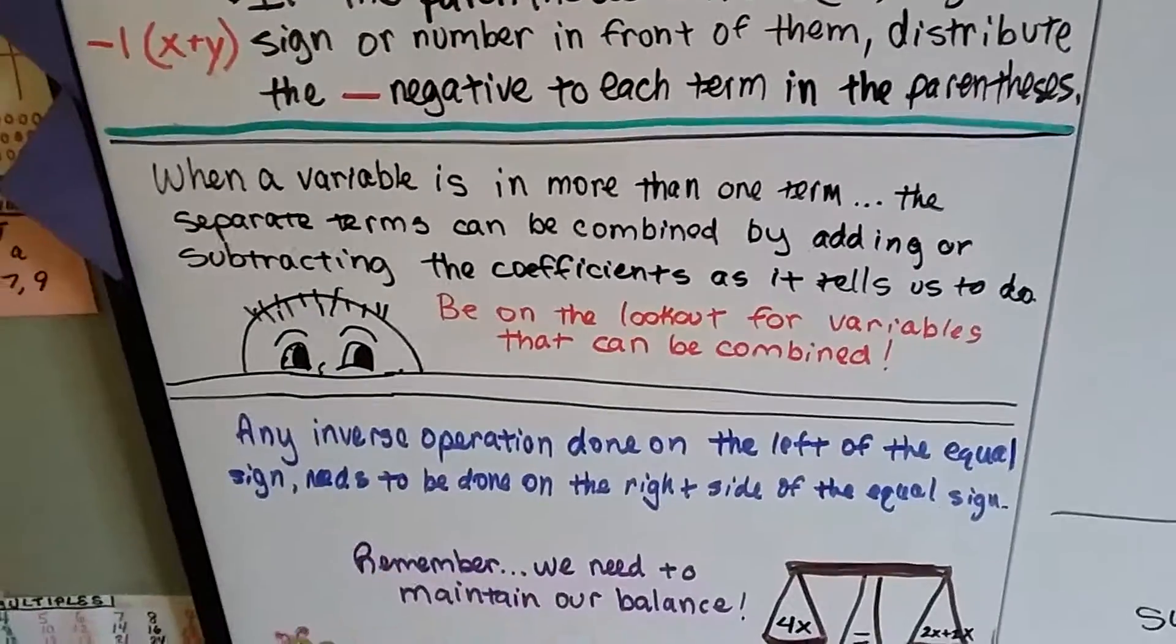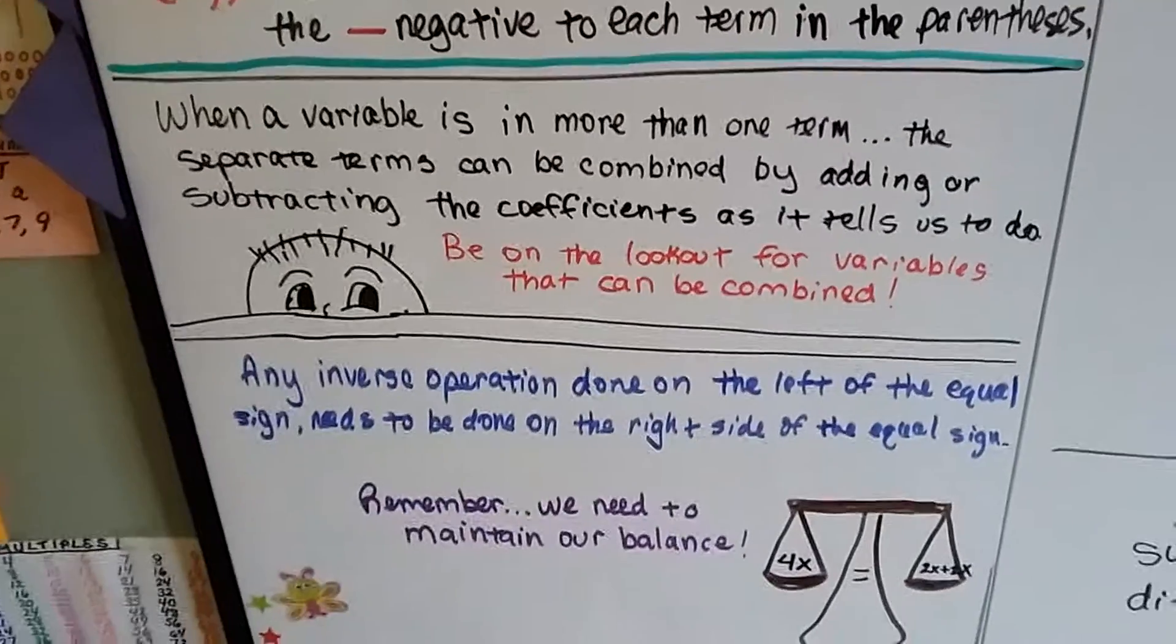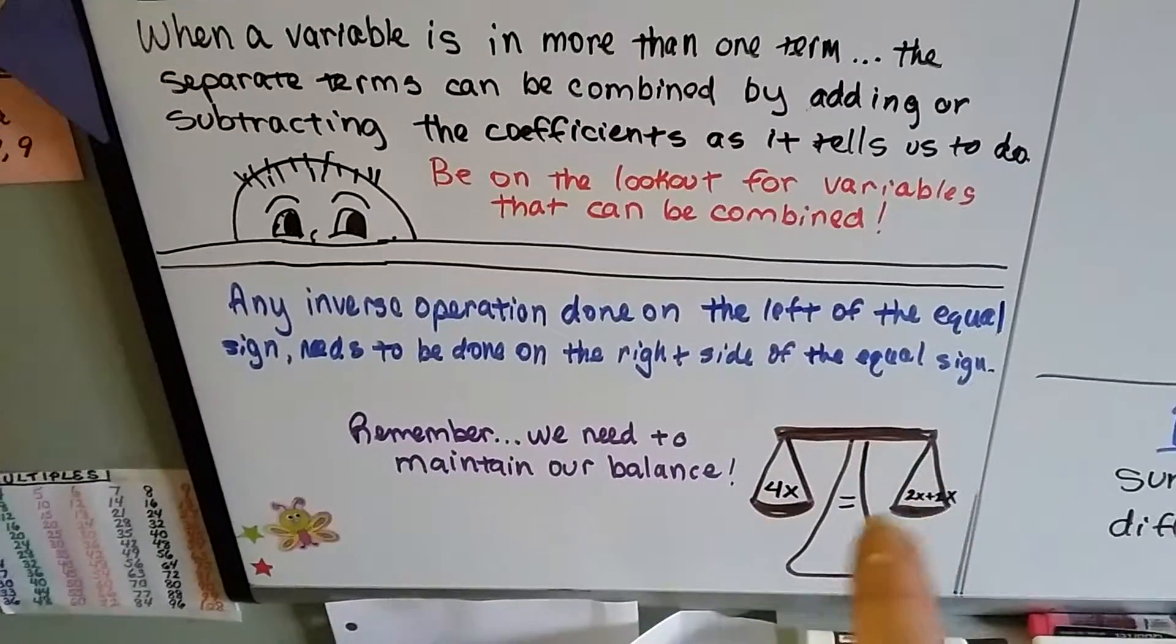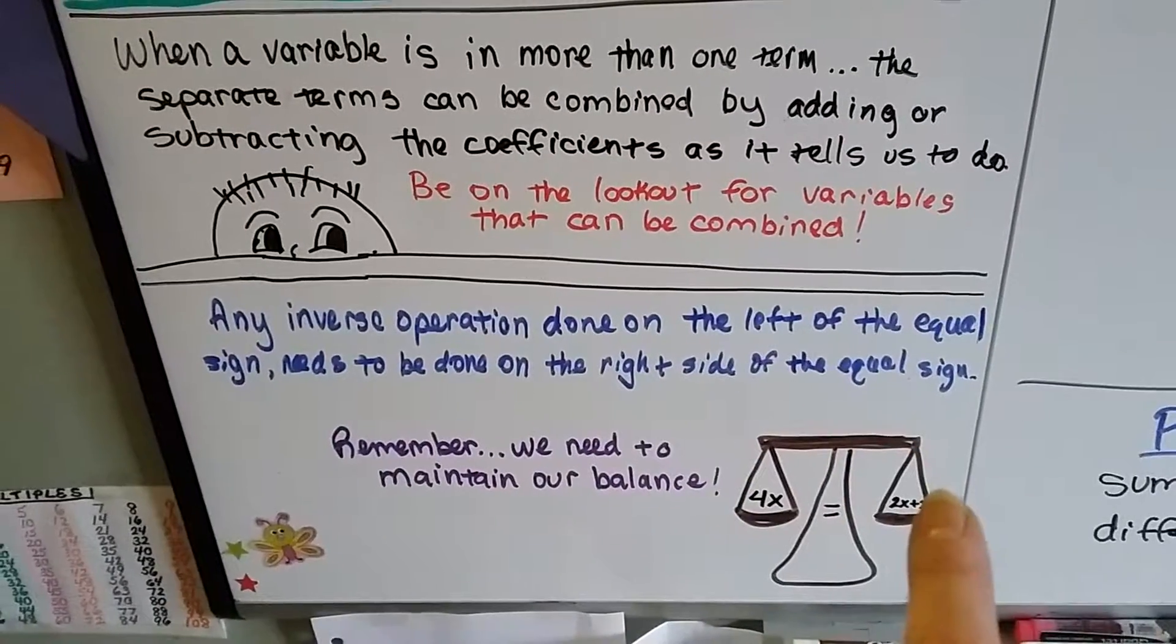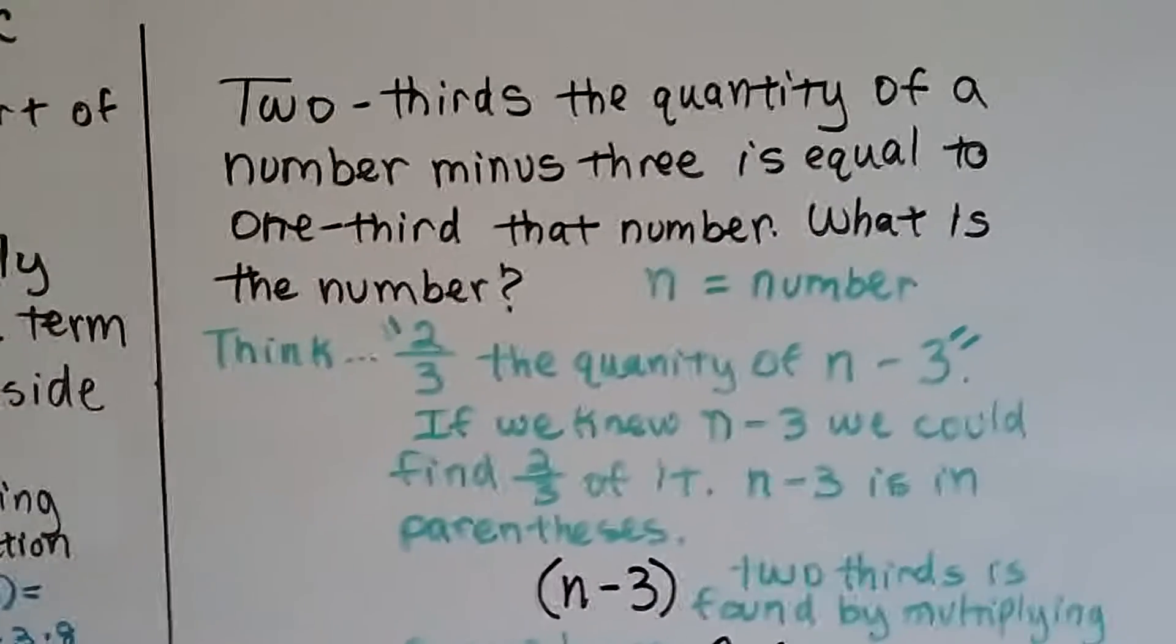So, let's remember to be on the lookout for variables that can be combined and remember to think of our equation as a scale and that one side of the equal sign has to balance with the other side of the equal sign. Alright, so here's what we've got.